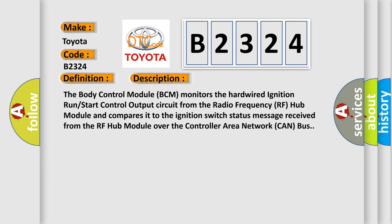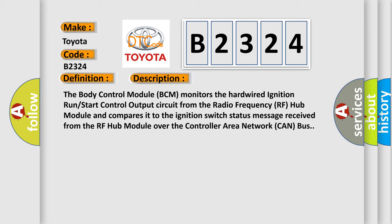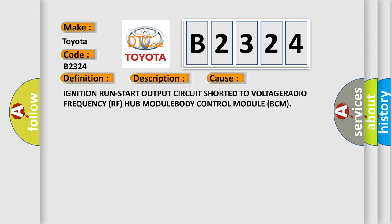The body control module (BCM) monitors the hardwired ignition run/start control output circuit from the radio frequency (RF) hub module and compares it to the ignition switch status message received from the RF hub module over the controller area network (CAN) bus. This diagnostic error occurs most often in these cases: ignition run/start output circuit shorted to voltage in the RF hub module or the body control module BCM.